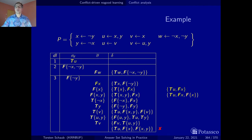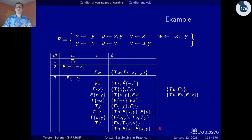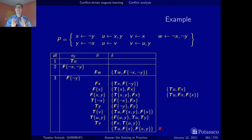Now things get interesting. This is also a conflict no-good — t of u is here and f of x is here. But now this conflict no-good has a unique implication point: there's only one literal left from the current decision level where the conflict occurred. So conflict analysis stops.